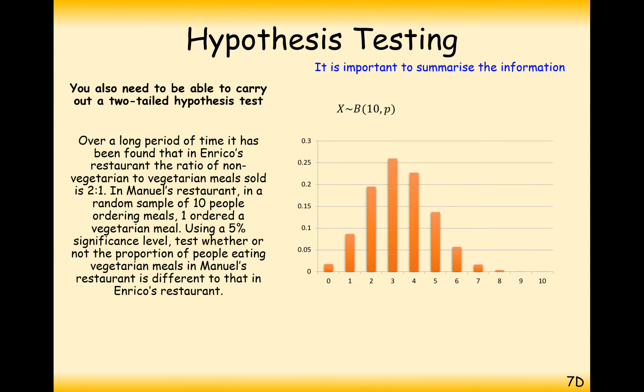So, highlighting our key variables here, so binomial distribution, vegetarian or not vegetarian, 10 trials. Probability of a third, we're going to test for vegetarianism or not. So, alternative hypothesis is that Enrico, sorry, Manuel's restaurant is different to Enrico's restaurant, and we've seen that from a trial of 10, we have one success.